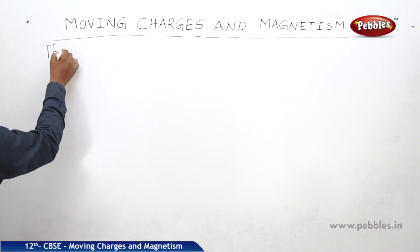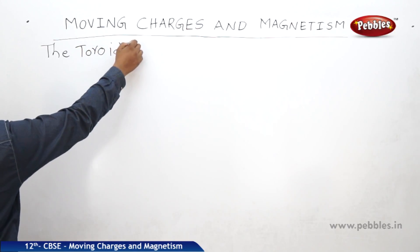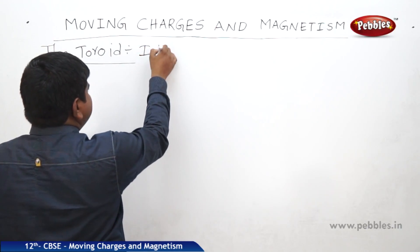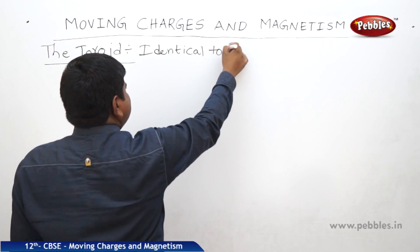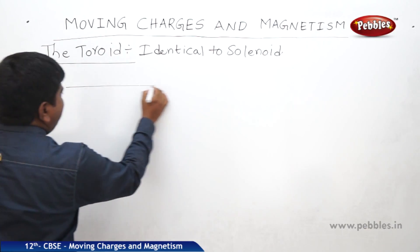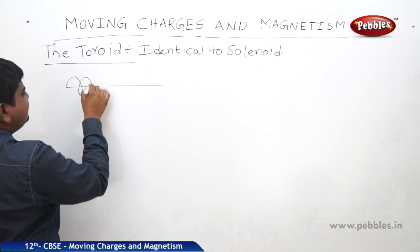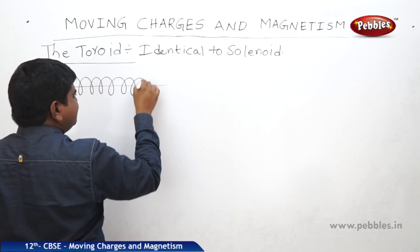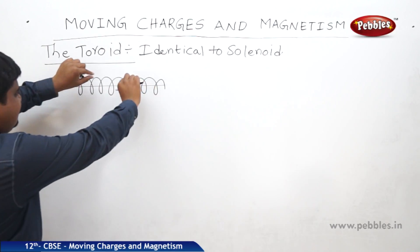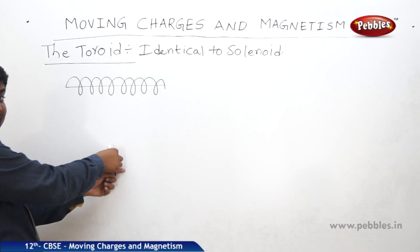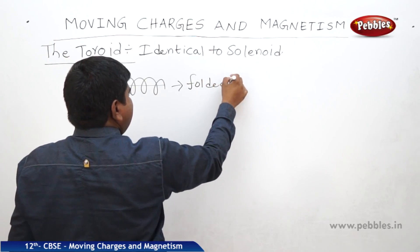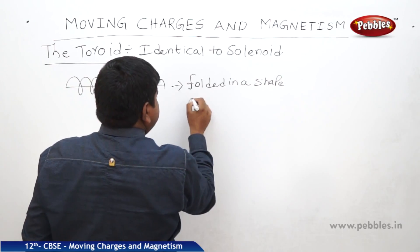Next, the toroid. A toroid is identical to or similar to a solenoid. A solenoid is a lengthy wire which has n number of turns along its length with equal spacing, and each turn acts as a concentric loop. Now, this lengthy wire is folded into the shape of a circle — that is nothing but the toroid.